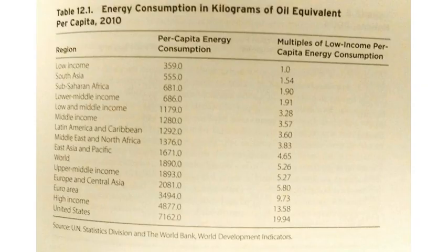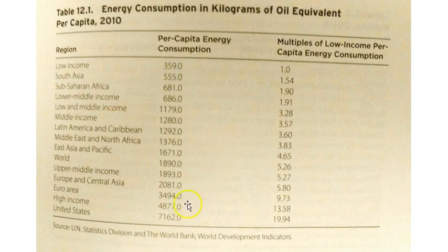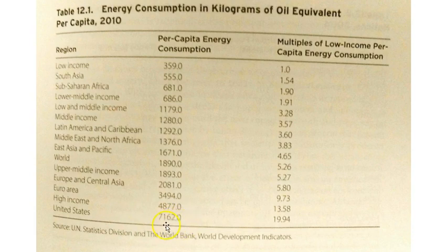Energy demands are much more than a matter of population — they have a lot to do with quality of life and income levels. As this table shows, low-income countries have per capita energy consumption of only 359 kilograms of oil equivalency, whereas high-income countries are over 10 times that at 4,770. Middle-income countries fall closer to the lower end at around 1,280. Some of the wealthiest countries, like the United States, exceed the high-income average by nearly double, with the average person consuming roughly 7,000 kilograms of oil per year.